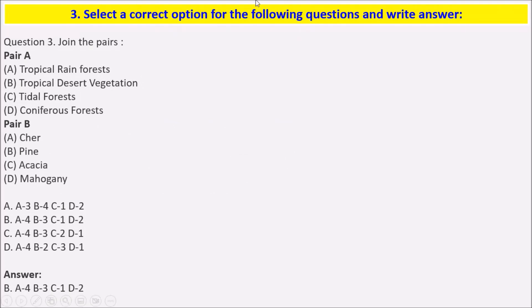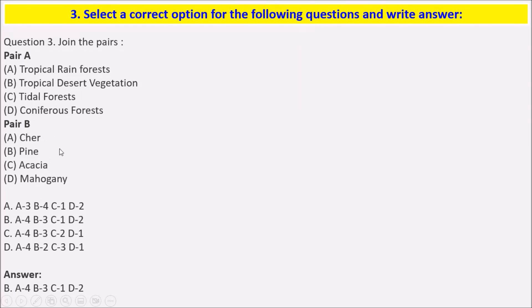Third question: join the pairs. Tropical rainforest — Mahogany. Tropical desert vegetation — Acacia. Tidal forest — Chair (Sheesham). Coniferous forest — Pine.